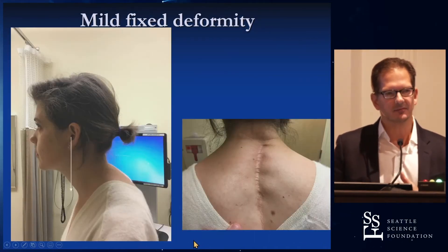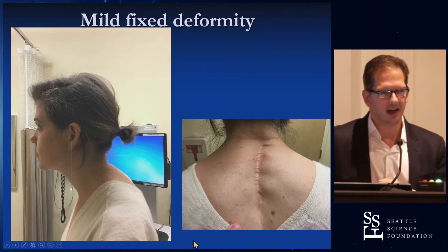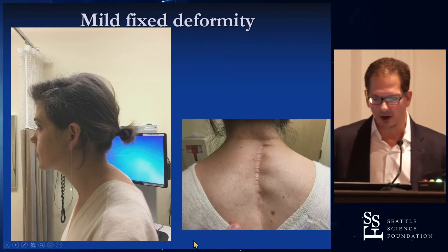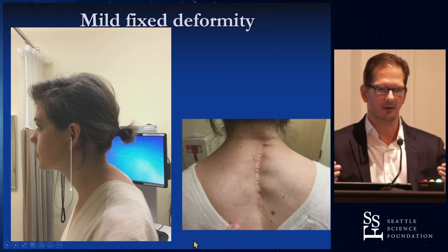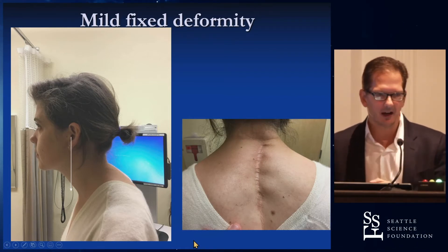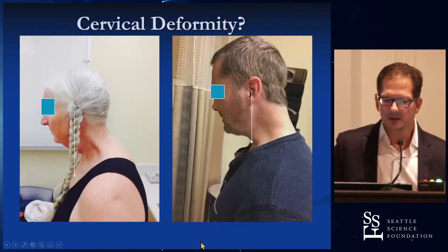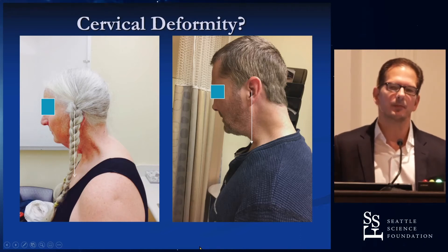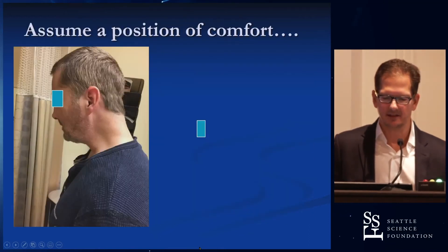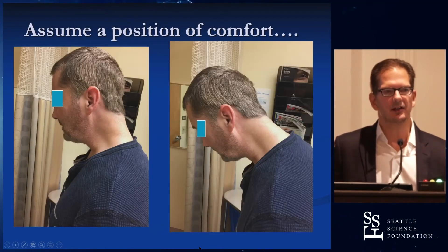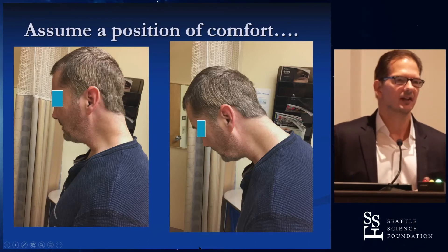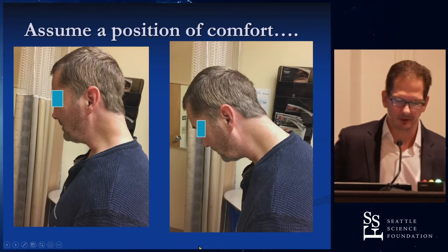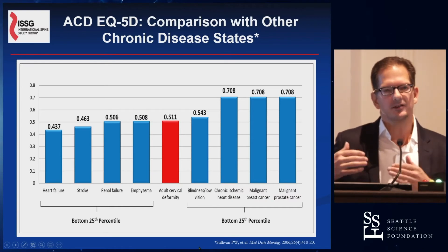This third patient had a long fusion for prior AIS — she's actually fused to the pelvis — and she had an extension for PJF very early on. She is also translated forward, and because of her prior fusion she's also going to need a three-column osteotomy. These patients, when you first look at them, you think they don't even have a cervical deformity. But they're using compensation to hide it, and if you ask them to assume a position of comfort, it uncovers the deformity. We call this the flat neck patient — they're hiding their deformity with retroversion of the occipital cervical junction.